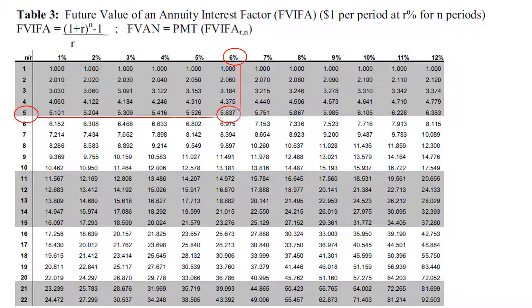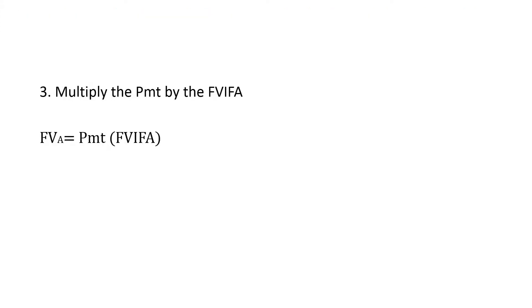Looking at 6% and 5 years in the table, the corresponding number is 5.637. We then multiply the payment by this future value interest factor of an annuity: one thousand times 5.637 gives an answer of $5,637.